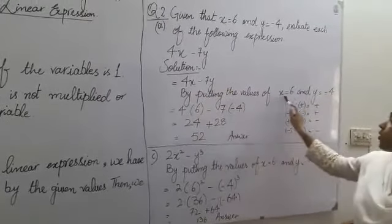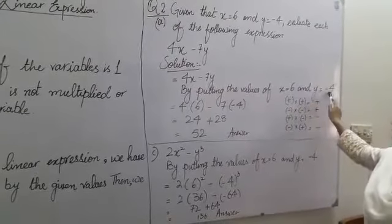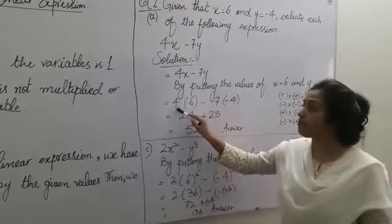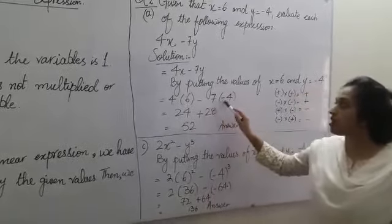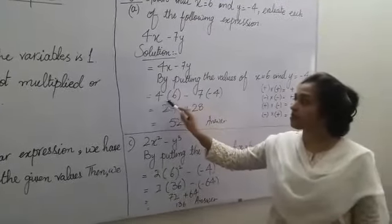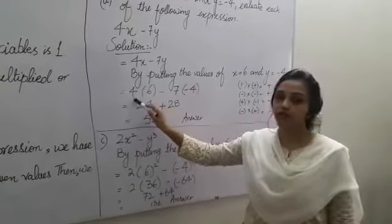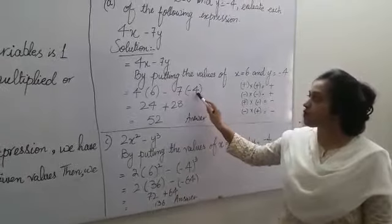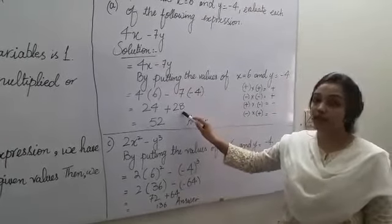By putting the value of x is equal to 6 and y is equal to minus 4, here we have 4 into 6 minus 7 into minus 4. If we multiply these values like 6 into 4 then we have 24 and 7 into 4 then we get 28.